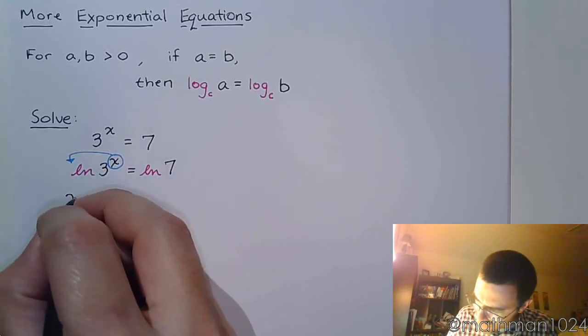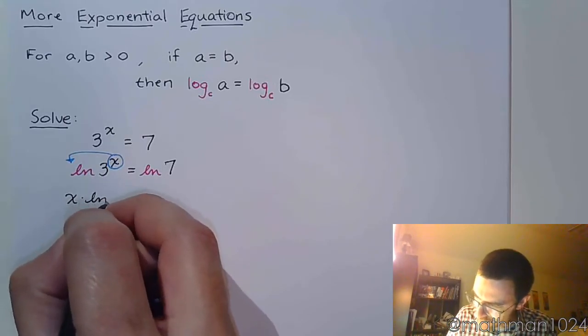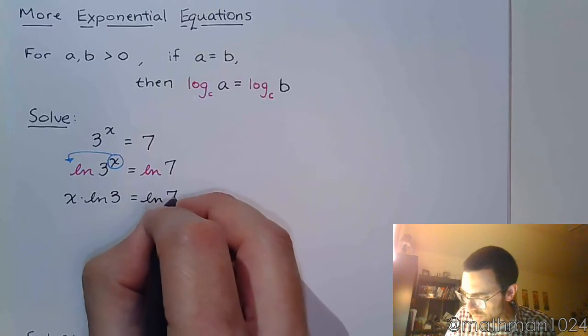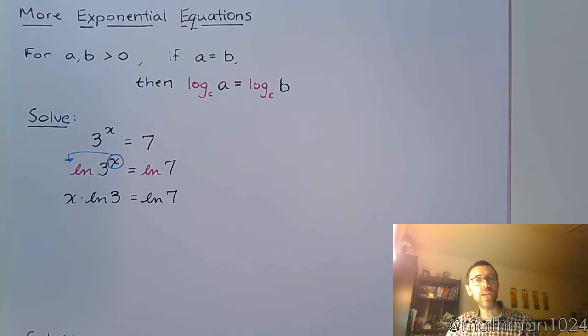So this now becomes x times the natural log of 3 is equal to the natural log of 7. And keep in mind that the natural log of 3 and the natural log of 7 are just numbers.